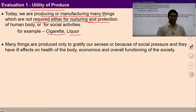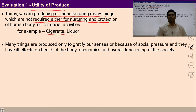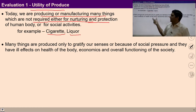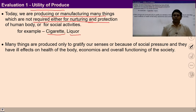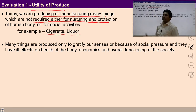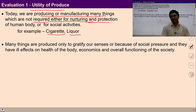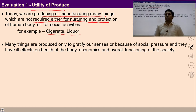For example, production of cigarettes and production of liquor — are these nurturing the body? Are these protecting the human body? Are these productions facilitating human social activities? If not, then why are we producing them? If these kinds of production are not ensuring nurturing or protection of the body or any meaningful activities in society, it means they are being produced in the context of madness of profit.